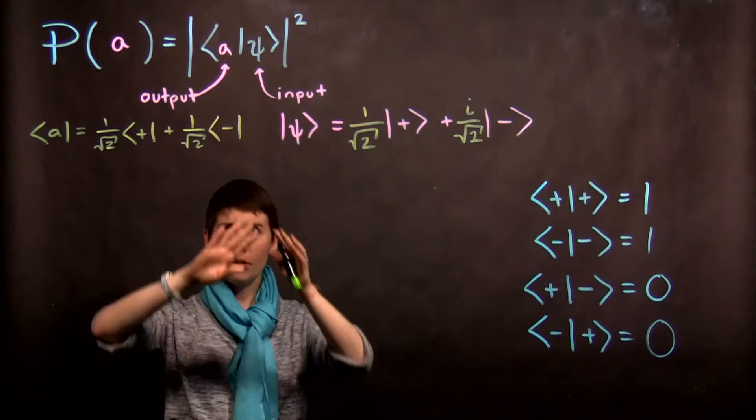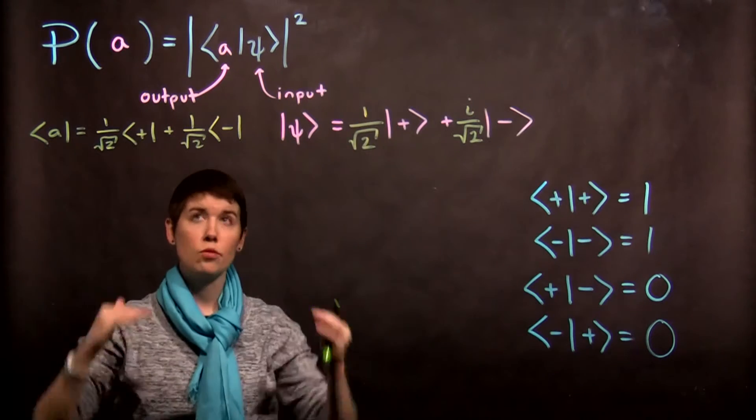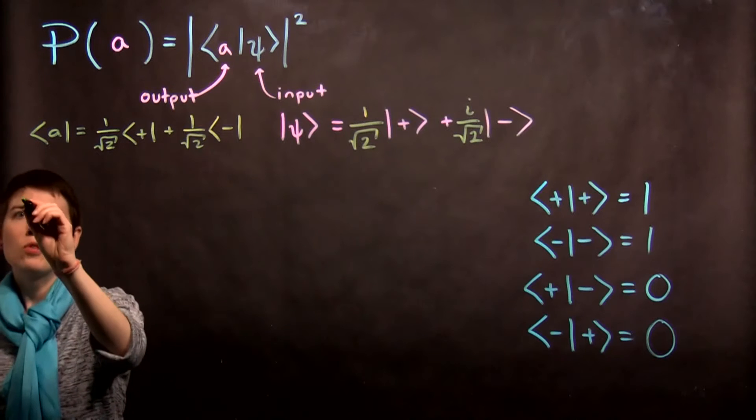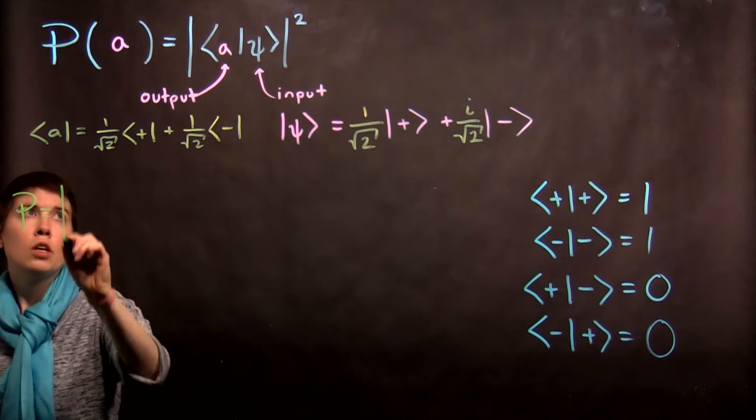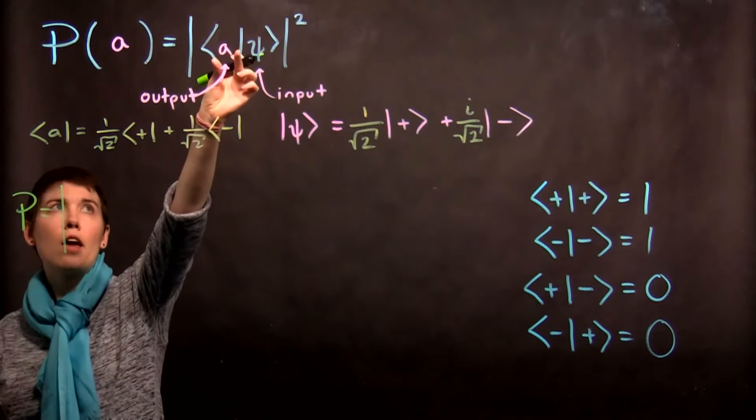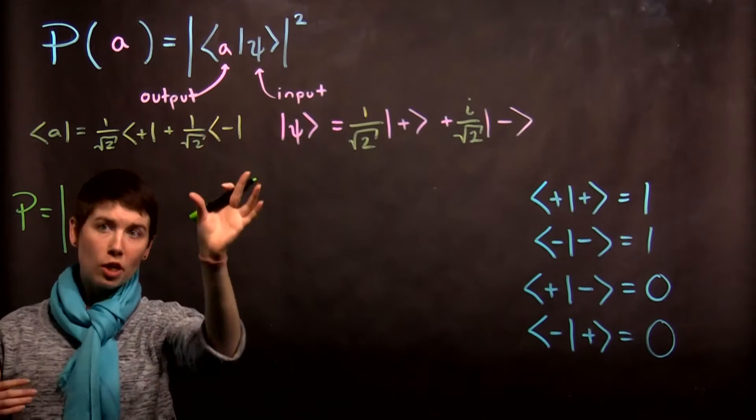So I've left some of it up from the past video. We're really now just working through this mechanism. So this probability now, we're going to take our A and we're going to express it in terms of the basis.